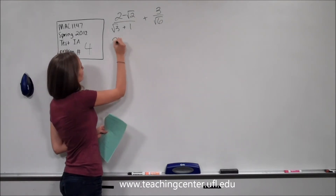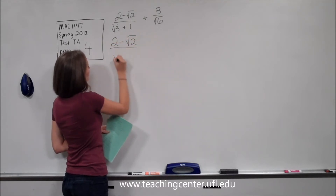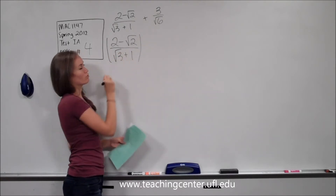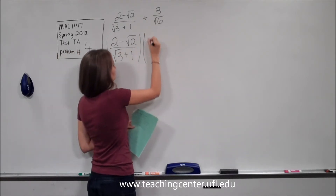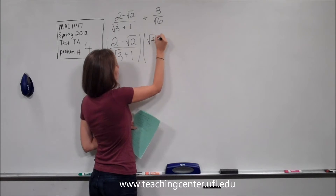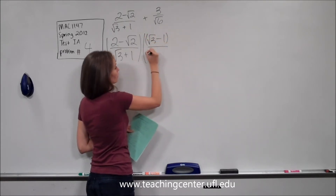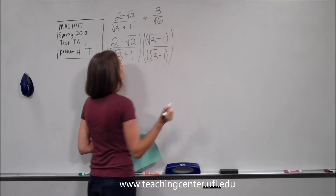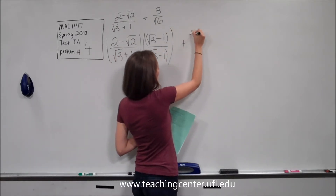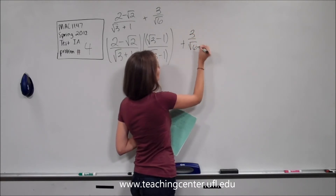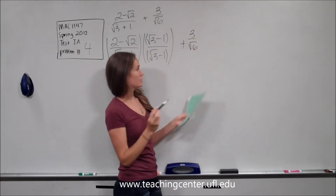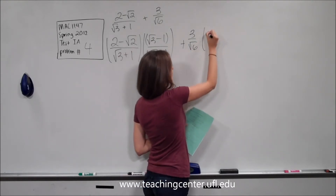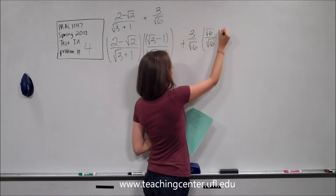So we have 2 minus the square root of 2 over square root of 3 plus 1, and we multiply it by the conjugate of square root of 3 plus 1. The conjugate is square root of 3 minus 1, so we multiply by square root of 3 minus 1 over square root of 3 minus 1. And then we have plus 3 over root 6, and the conjugate of square root of 6 is just square root of 6, so we multiply by square root of 6 over square root of 6.